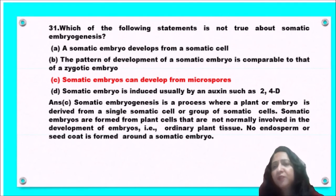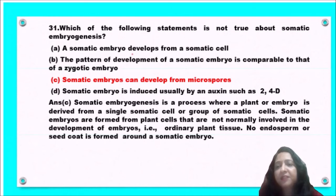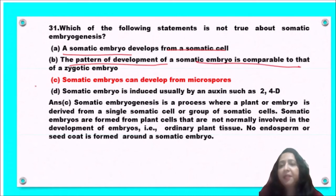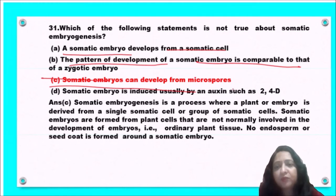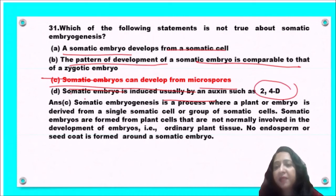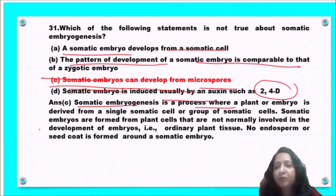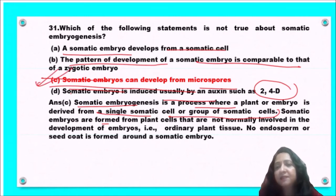Next question: which statement is NOT true about somatic embryogenesis — a somatic embryo develops from a somatic cell; the development pattern of somatic embryo is comparable to zygotic embryo; somatic embryos can develop from microspores; or somatic embryo is induced by auxin 2,4-D? Somatic embryogenesis is a process where a single somatic cell or group of somatic cells divides and forms an embryo. Option C is the correct answer — somatic embryos cannot develop from microspores, as microspores are not somatic cells.